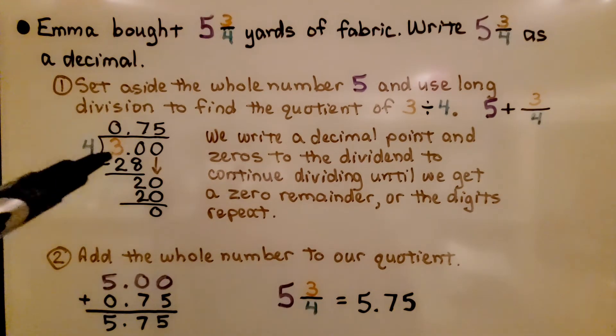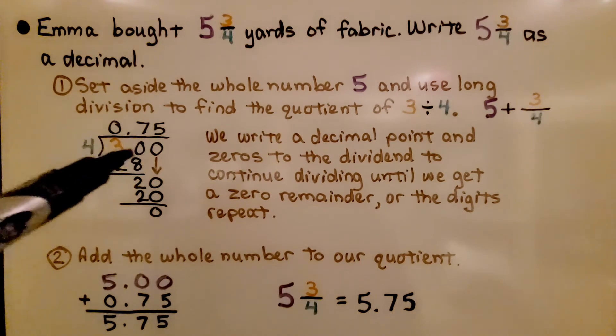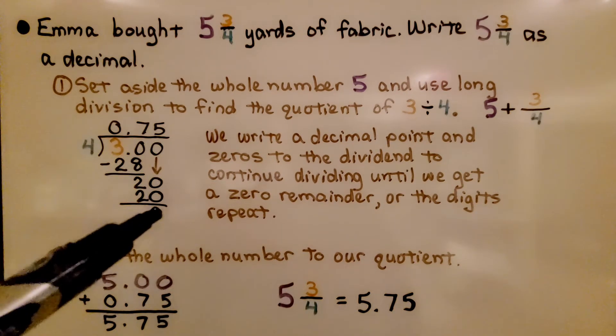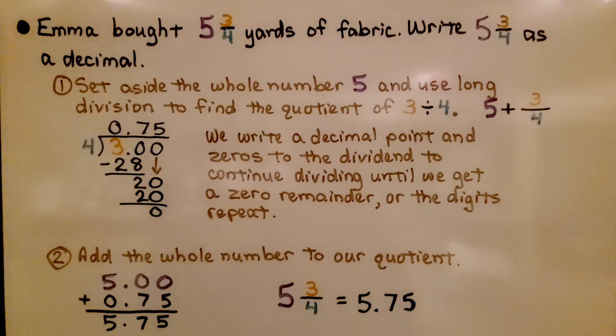We write a decimal point and zeros to the dividend to help us continue dividing until we get a zero remainder or the digits repeat. We do 3 divided by 4 and get 75 hundredths.